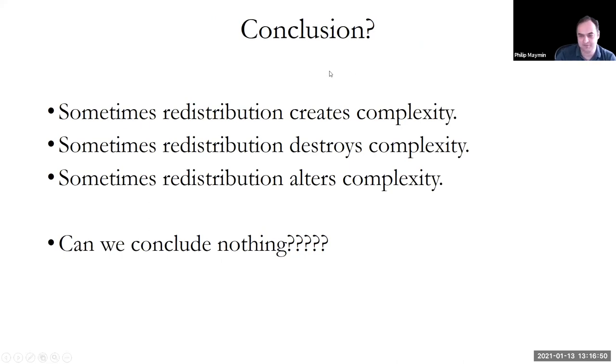You might think, well, what's the conclusion? Sometimes it creates complexity. Sometimes redistribution destroys complexity, and sometimes it alters it. We learn nothing. So yeah, there could be more, there could be less. What's the big deal? In fact, there is a guaranteed conclusion here, an actual policy implication. What is it? If you take cellular automata, and then you redistribute, let's say every day. Every black cell becomes white, every white becomes black. What have we learned?